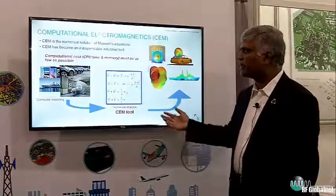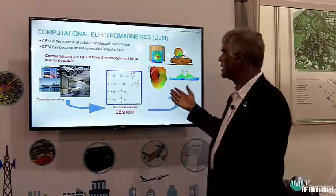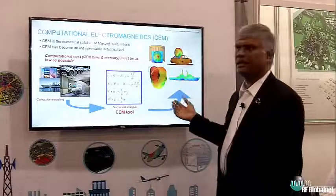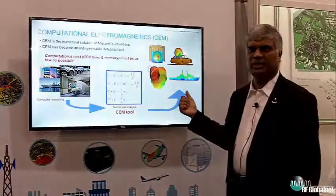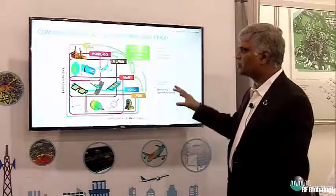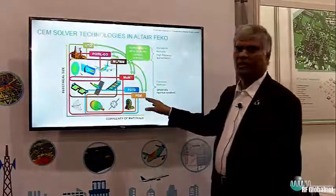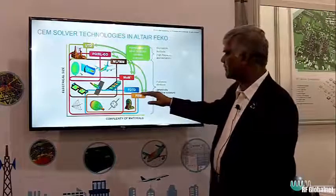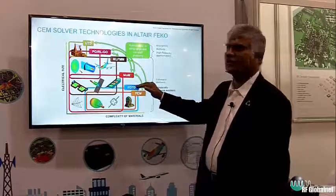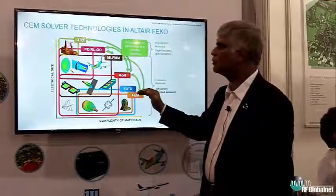Introduction to computational electromagnetics: you start with realistic objects, you discretize them, and you solve Maxwell's equations. Then you get the electric and magnetic fields and find the quantities you need for antennas — for example, the input return loss, radiation patterns and other quantities. To do these things, there are various solutions available. The ones we focus on today for wearables and implantables are the finite element method, finite difference time domain, method of moments and MLFMM. These are referred to as full wave solutions, and there are also asymptotic solutions if you go beyond the full wave solution limitations.